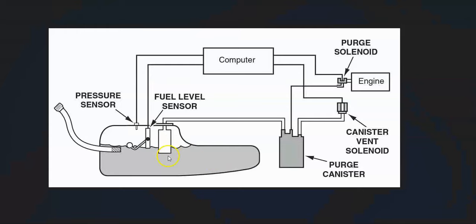The basics of the EVAP system: a hose leaves from the gas tank and goes over to what's called a purge canister or charcoal canister. This holds the gas vapors when the engine is not running. Then a hose leaves the canister and goes up to the top of the engine to what's called a purge valve solenoid, which opens when the engine is running so the gas vapors get burnt off, and closes when the engine is not running.